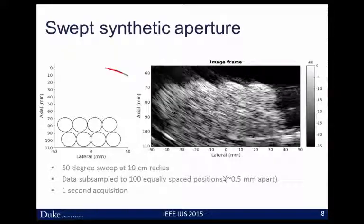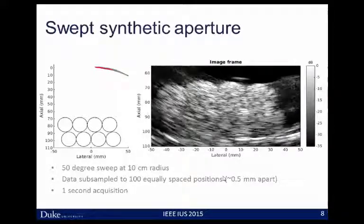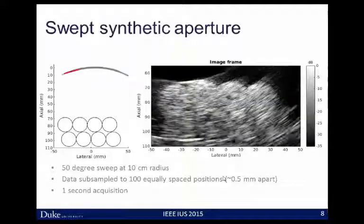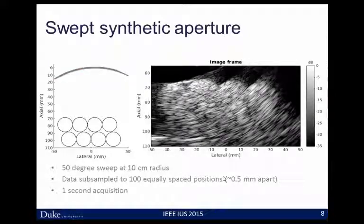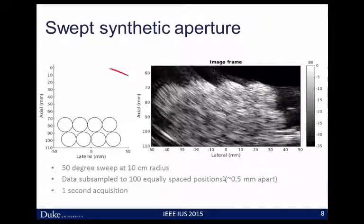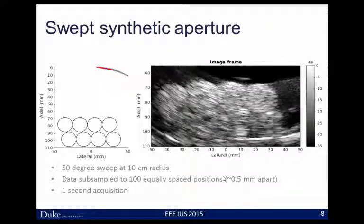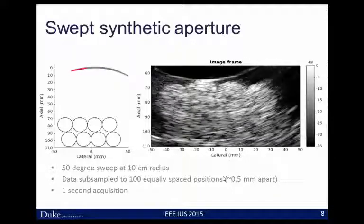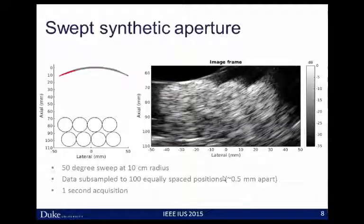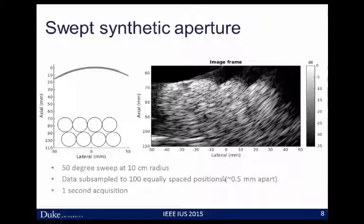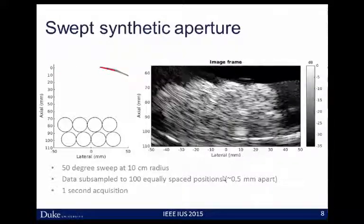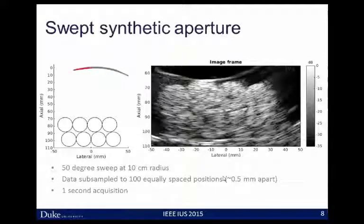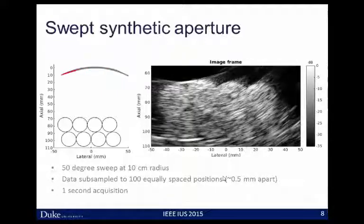Here's an example of what one of those sweeps looks like. In the cartoon, you can see the active red aperture sweeping from right to left — a 50-degree sweep at a 10-centimeter radius. On the right you can see the sample image frames, which are low lateral resolution, coming from a single diverging wave. We're not using all thousand frames since we'd be spatially oversampled. Instead, we subsample the data to give equally spaced positions across the arc, roughly half a millimeter apart, giving us about a hundred frames played back in this movie.